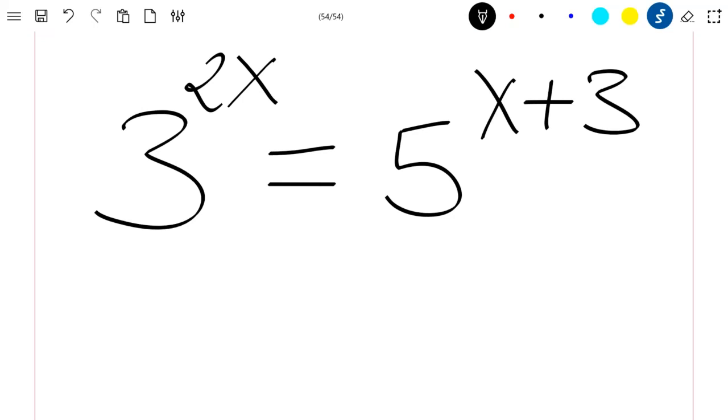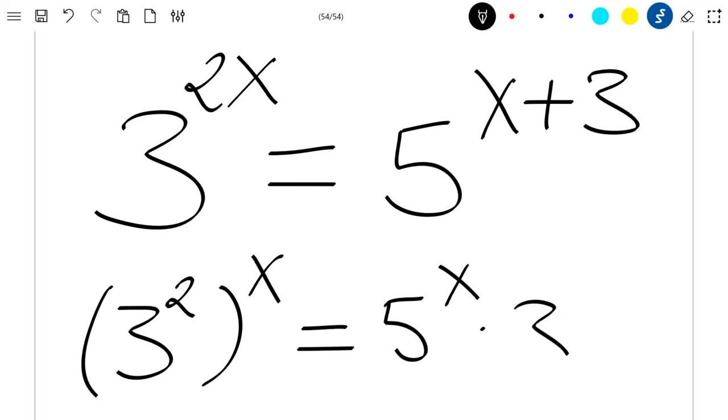So let's just rewrite our equation as 3 squared to the power x which is equal to 5 to the power x times 5 to the power 3.